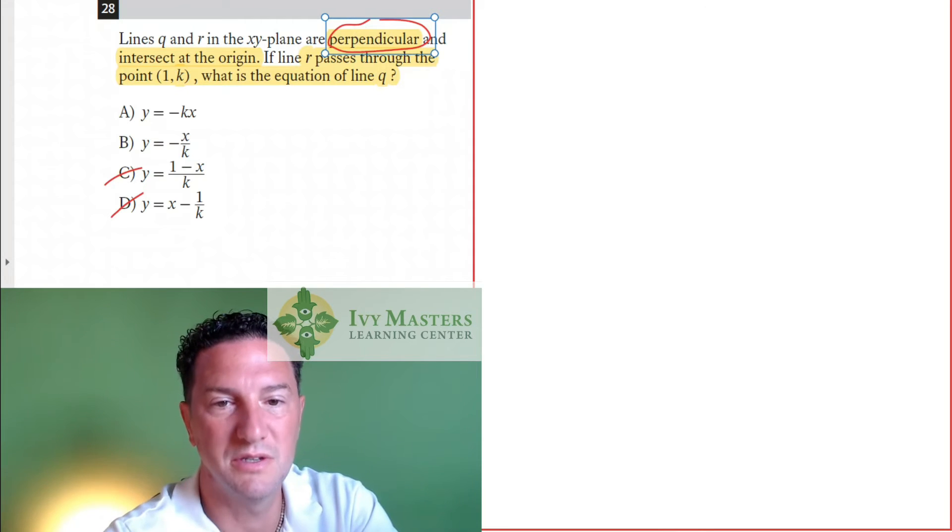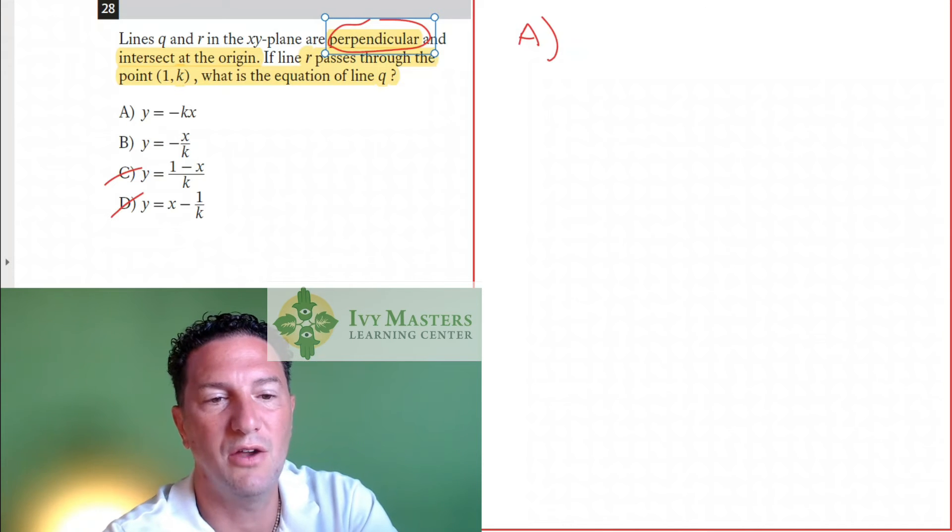Now, when you look at your answer choices, for answer choice A, what you can see is that if y equals negative k over x, and that's line Q, then the equation of line R must be y equals, so your slope here is negative k. It's going to be the opposite reciprocal. So it's going to be positive 1 over k times x.